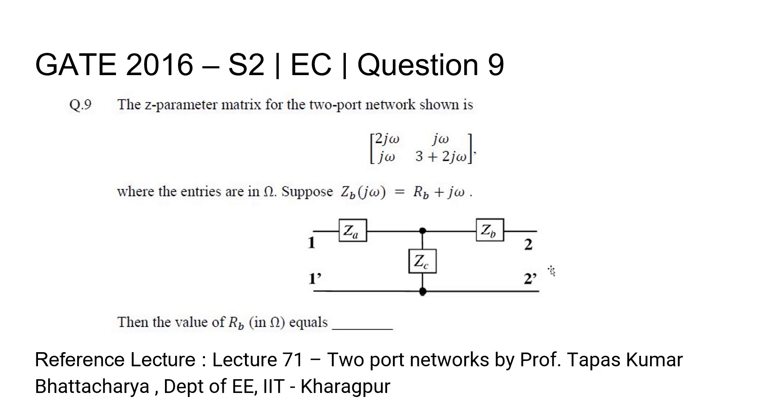The z-parameter matrix for the two-port network shown is given as: [2jω, jω; jω, 3+2jω], where the entries are in Ω. Suppose zb in jω format is given by rb + jω. Then, the value of rb equals?